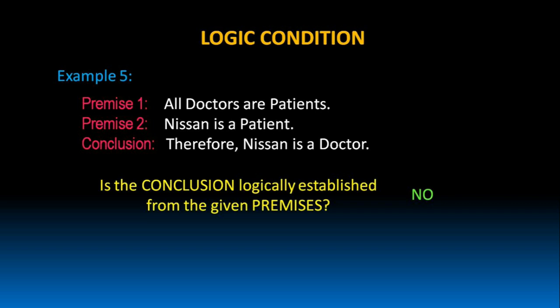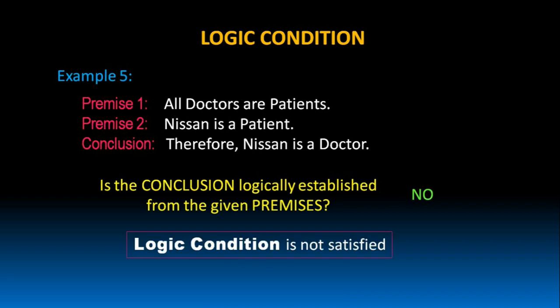The reason is premise 1 says all doctors are patients. It doesn't say all patients are doctors. If it said all patients are doctors, then we could conclude Nissan is a doctor because he is a patient. But premise 1 says all doctors are patients, and from that we cannot conclude Nissan is a doctor just because he is a patient. Hence, logic condition in this argument is not satisfied.